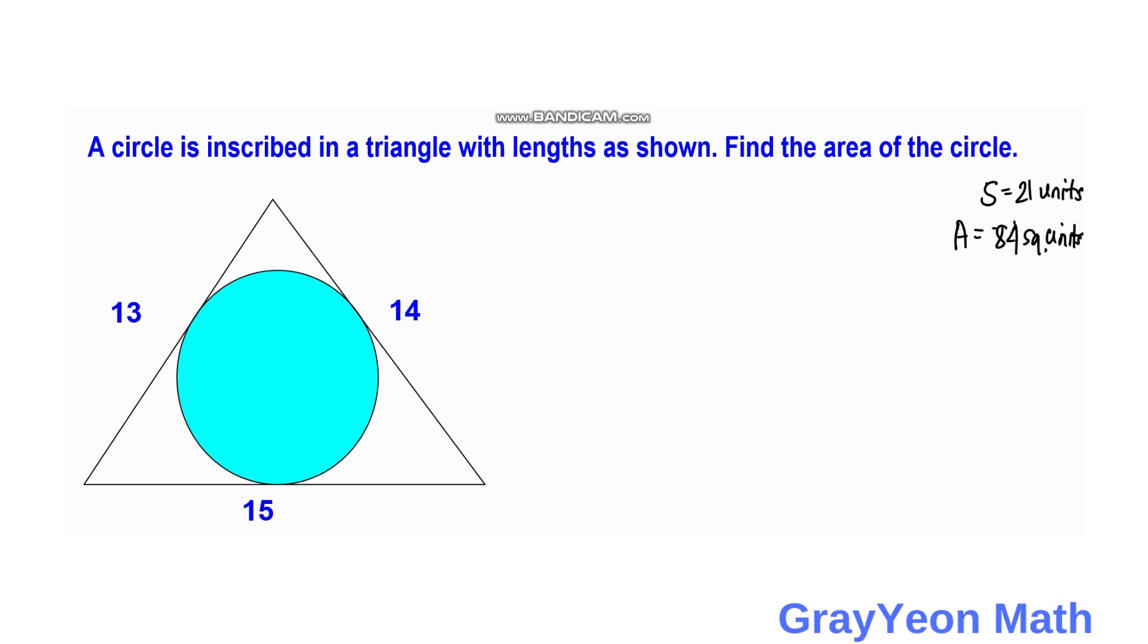Next thing we need to do is draw the radius of this circle against the sides of the triangle. Since this circle is mutually tangent with the triangle, then this should be perpendicular radii.